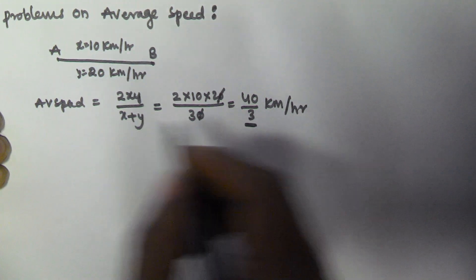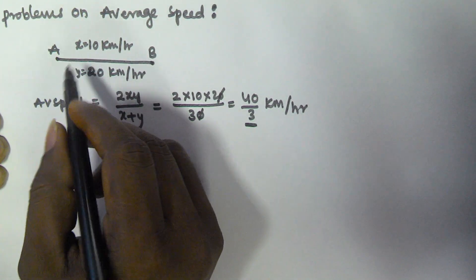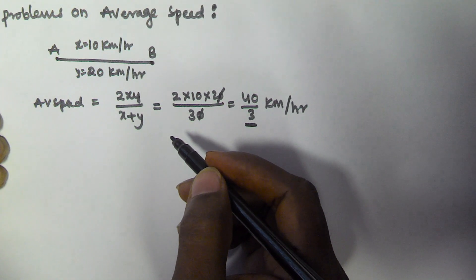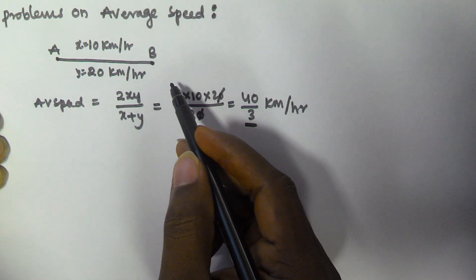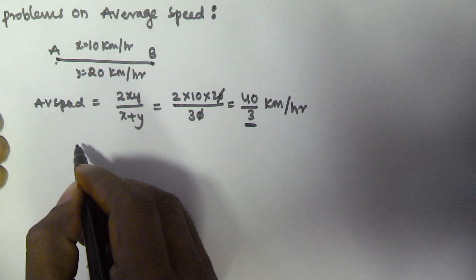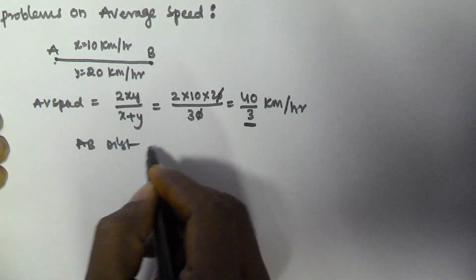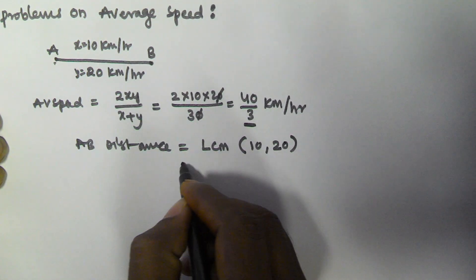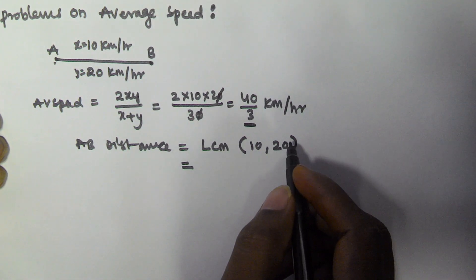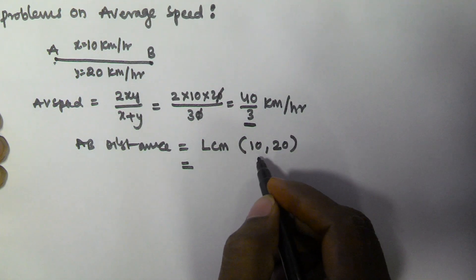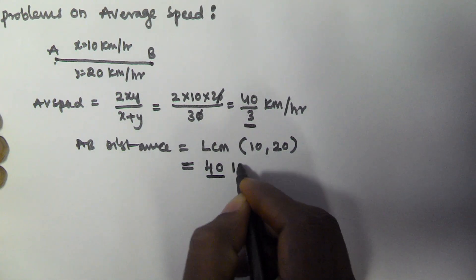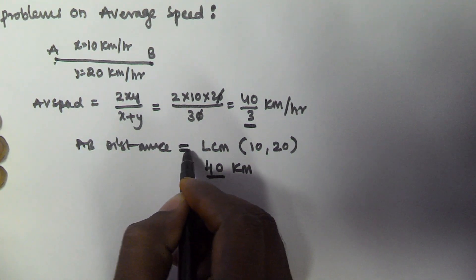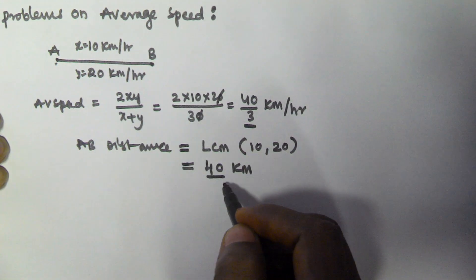There is another way to solve this problem. Since the distance from A to B and B to A is constant, I can take any value for the distance. I will take it as the LCM of the two speeds — LCM of 10 and 20. That gives 40 km. So I am taking the A to B distance as 40 km.